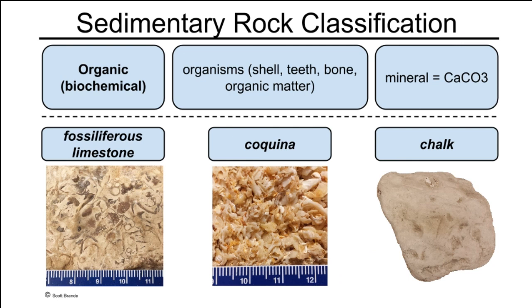So, we have three types of organic limestones: fossiliferous limestone, coquina, and chalk.